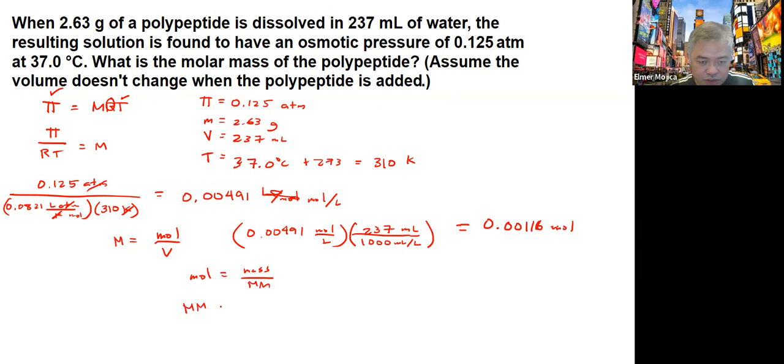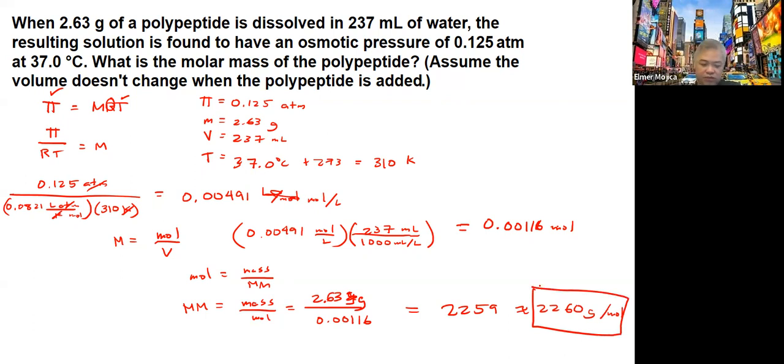So what we have is molar mass equals mass over mols. So we have 2.63 grams over 0.00116. You will end up getting around 2260 or maybe around 2260 grams per mol.